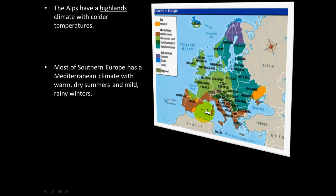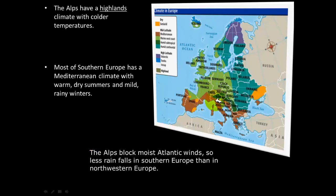Most of southern Europe has a Mediterranean climate with warm dry summers and mild rainy winters. The Alps mountains block Atlantic winds so that less rain falls in southern Europe than in northwestern Europe. This is another example of physical processes affecting Europe: first, plate tectonics created the Alps, and second, the blocking of moist Atlantic winds prevents southern Europe from experiencing the same rainfall as northwestern Europe.